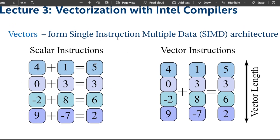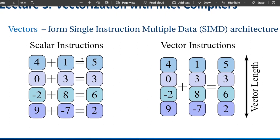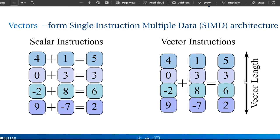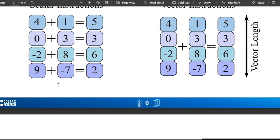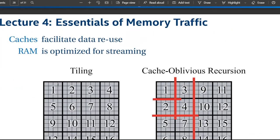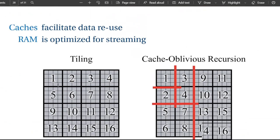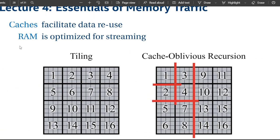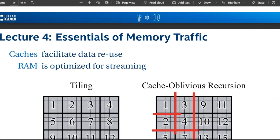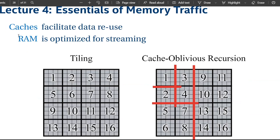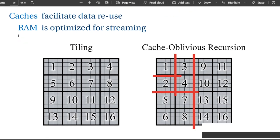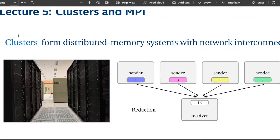With SIMD, with one clock cycle we can add multiple numbers in the vector register in one go, depending on what the vector length is, as opposed to having to do them one at a time. We'll talk about how we're going to handle the cache, facilitate data reuse, and optimize RAM streaming — depending on the use case. Our use case is the stencil, then we'll talk about design patterns in clusters and distributed computing.